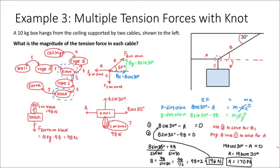I can then take this value and plug it in for B in the first equation: 196 cosine 30 minus A equals zero. So A equals 196 cosine 30. Plugging this into my calculator, A is equal to 170 newtons. I've already solved for the tension in rope C earlier — that was 98 newtons. So I'll write my answers up in the right-hand corner.